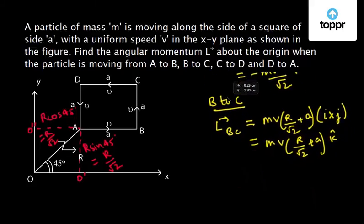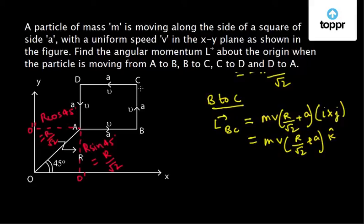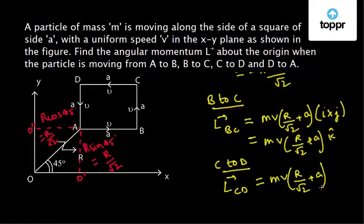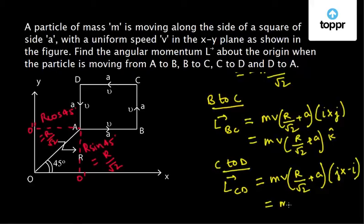For path C to D, L(C→D) = mv·(r/√2 + a). Here r is in the positive y direction (j) and the velocity is in the negative x direction (−i). So we have j×(−i) = −(j×i) = −(−k) = k. Therefore L(C→D) = mv·(r/√2 + a)·k̂.